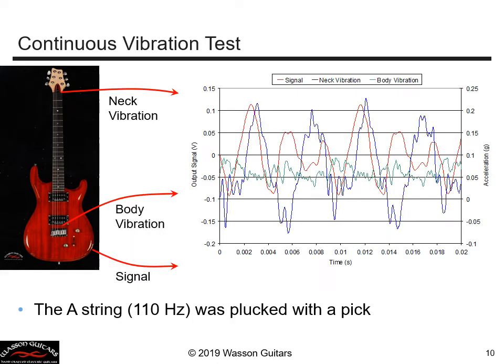What if we pluck a string and see the vibration response on the structure after the string is excited and vibrating? We get vibration on the neck and the body, and we have the output signal from the pickup and the output signals from the accelerometers. Do we see any relationships in these plots between the three signals? It's very difficult to make any sense of this information.